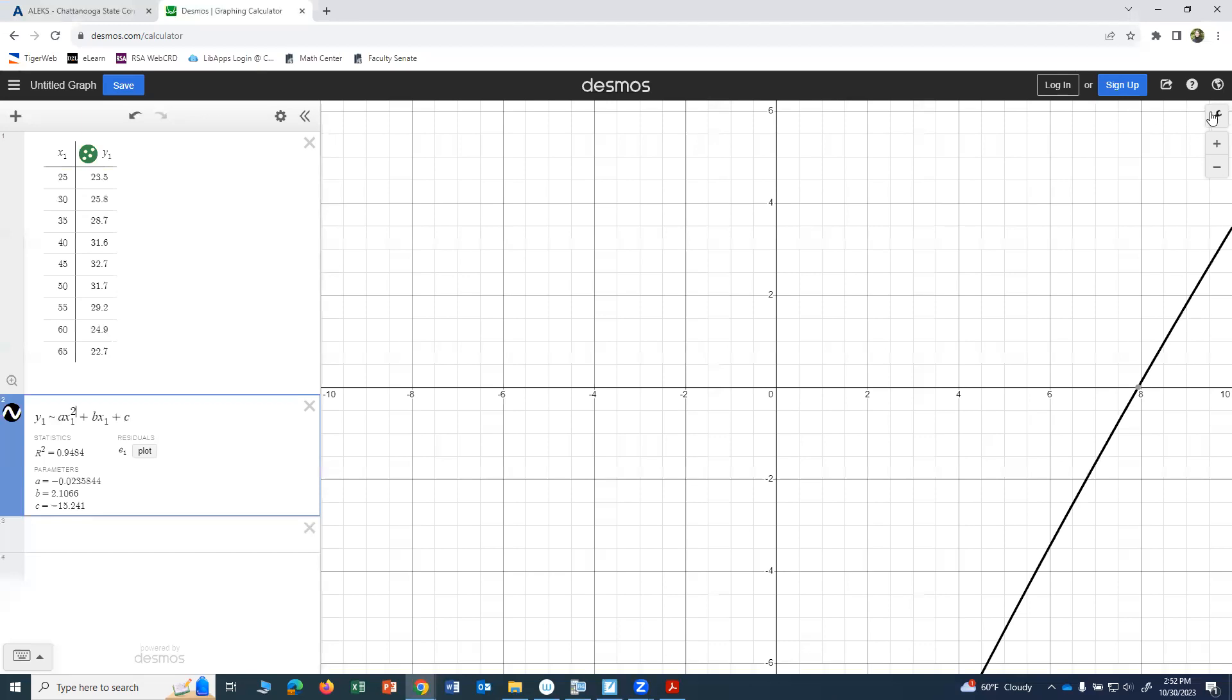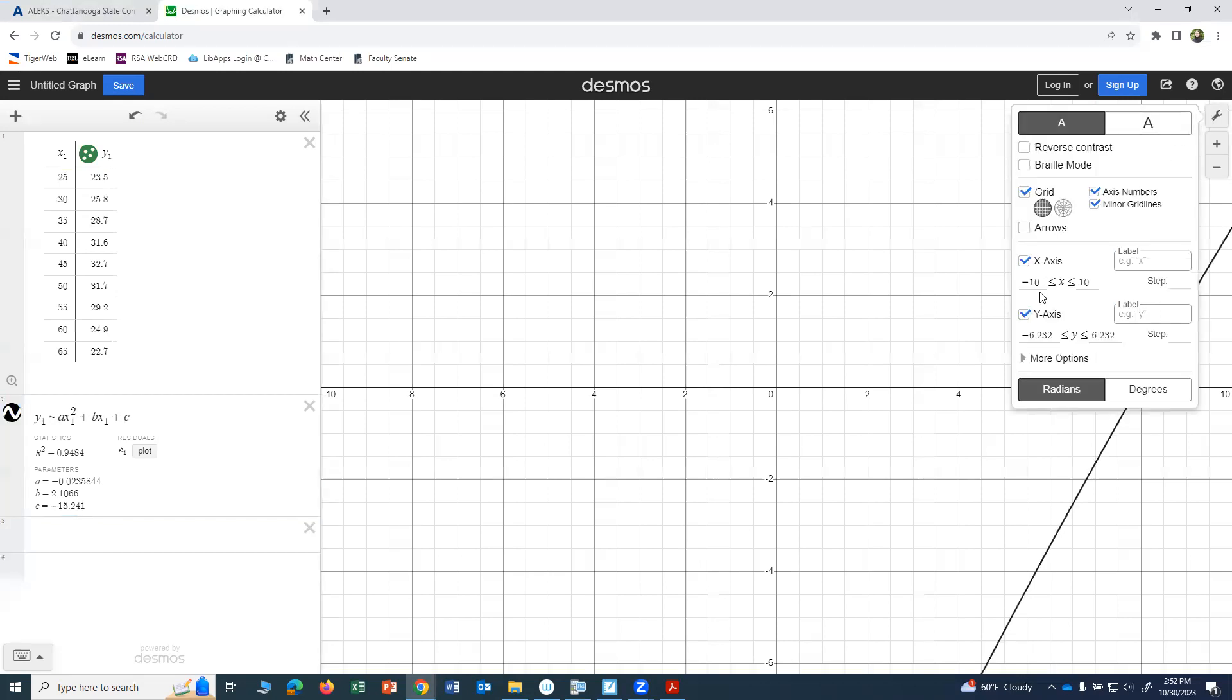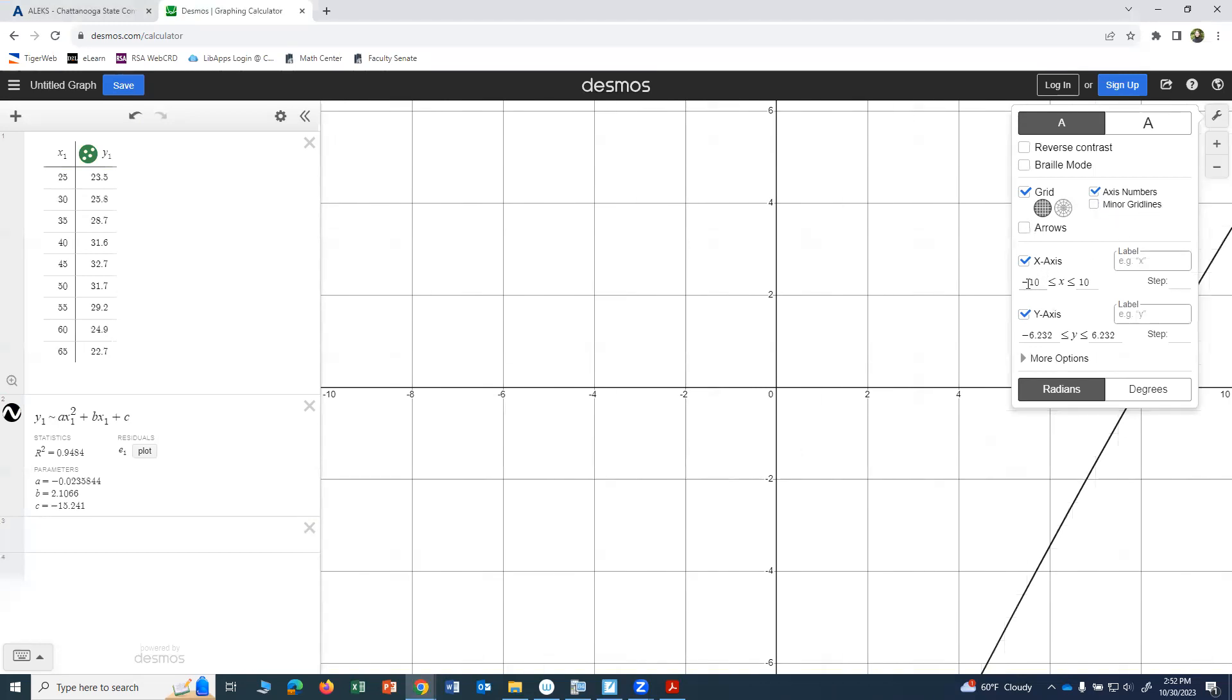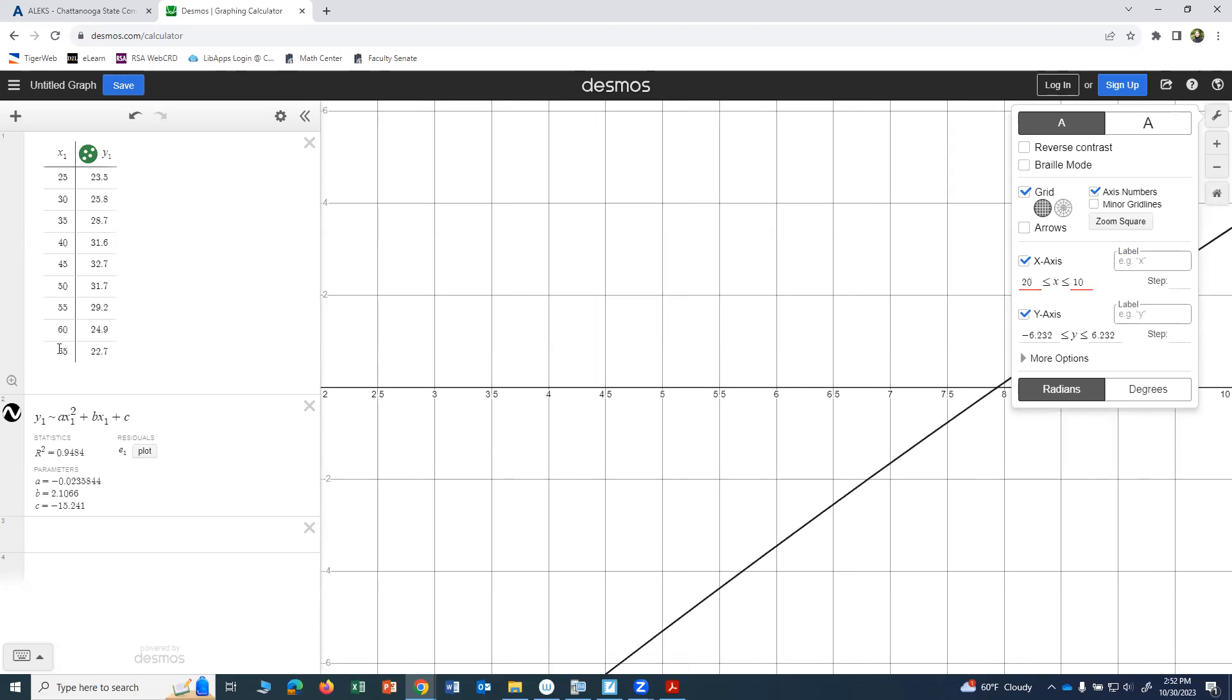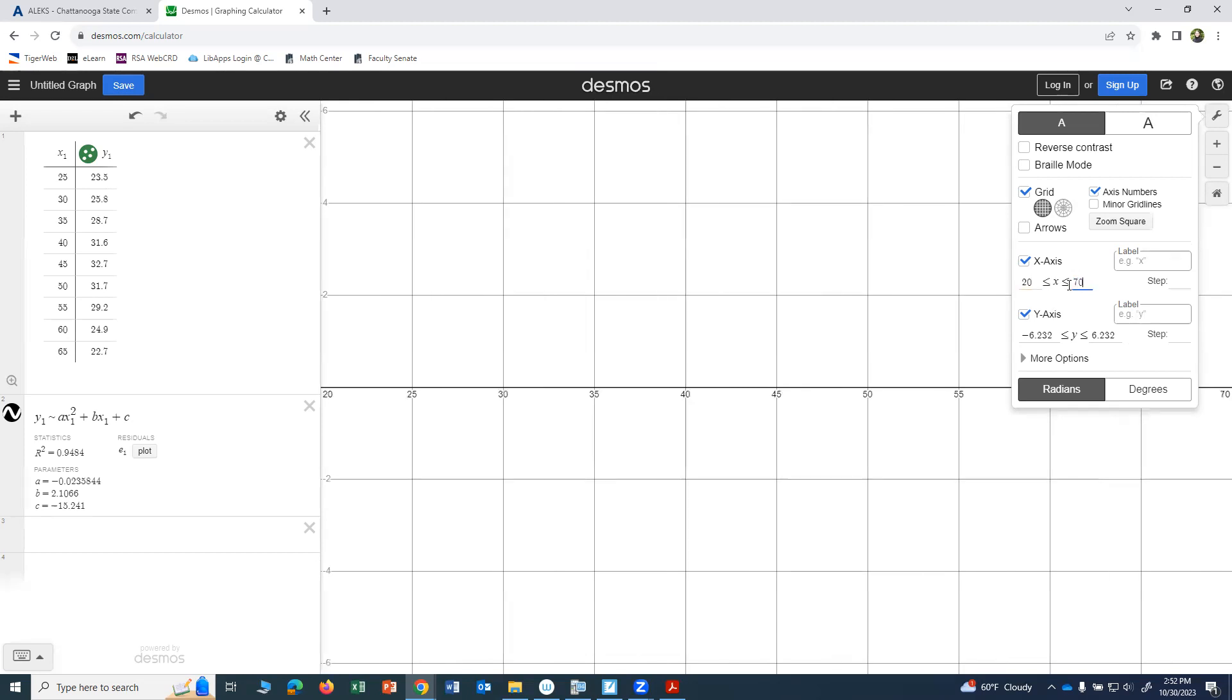So now I have to adjust my window. I come over to this wrench on the right-hand upper corner, and I'm going to go ahead and get rid of my minor grid lines. For the x-axis, I want my lowest x to be smaller than the lowest x in my table. So the lowest x in my table is 25, so I'm going to make my lowest x value 0. And my highest x value is 65, so I'll make my highest x value 70.